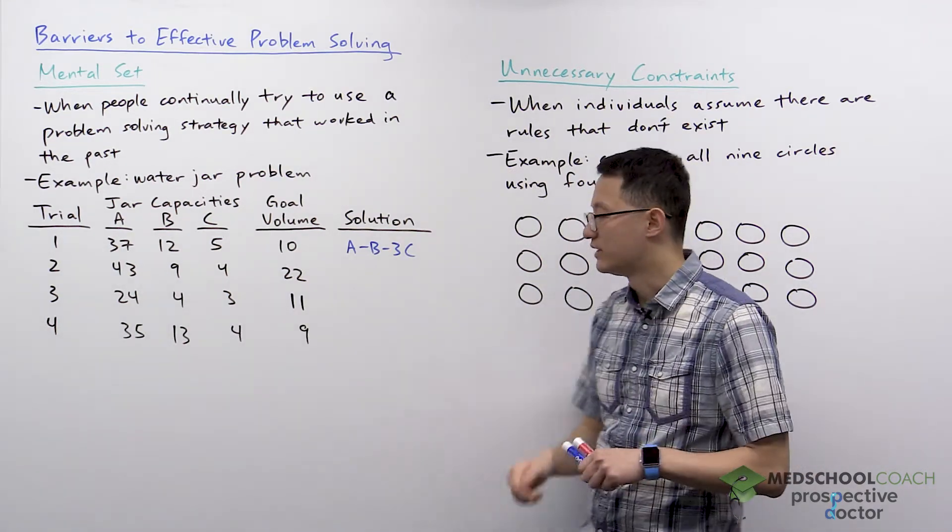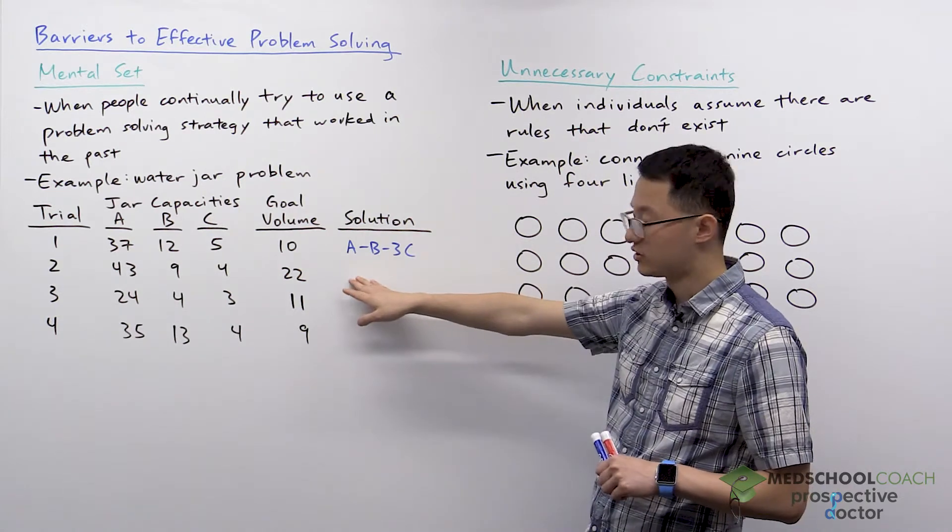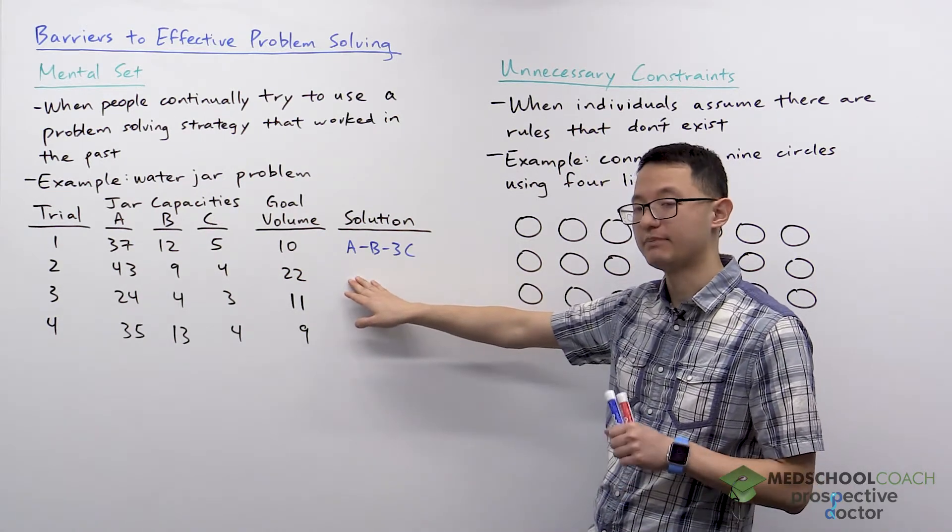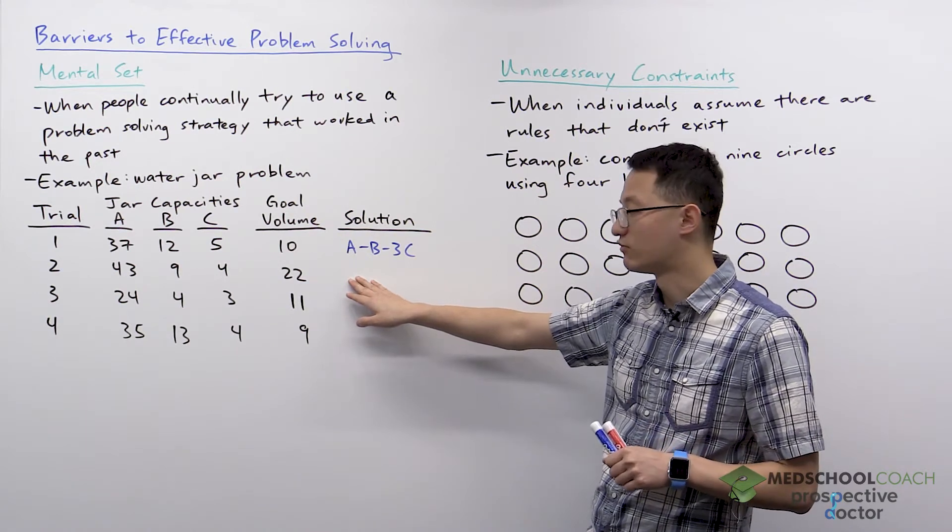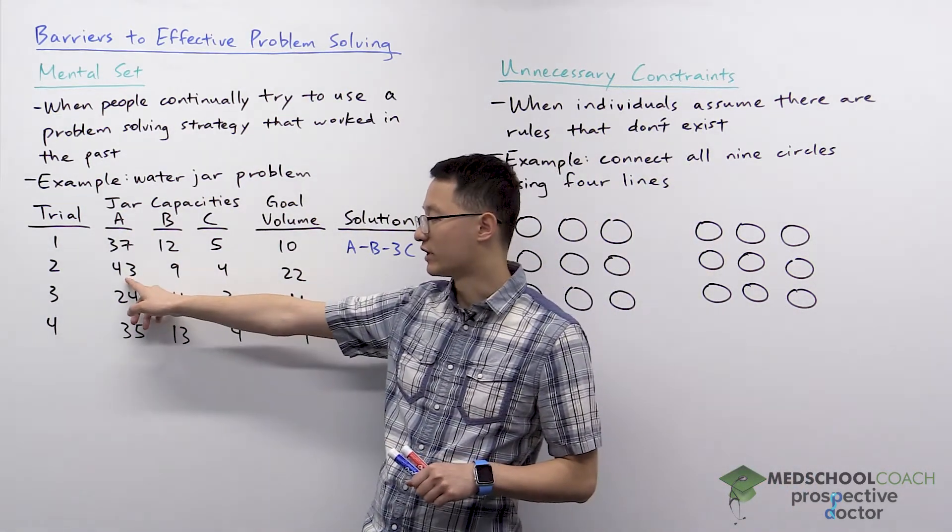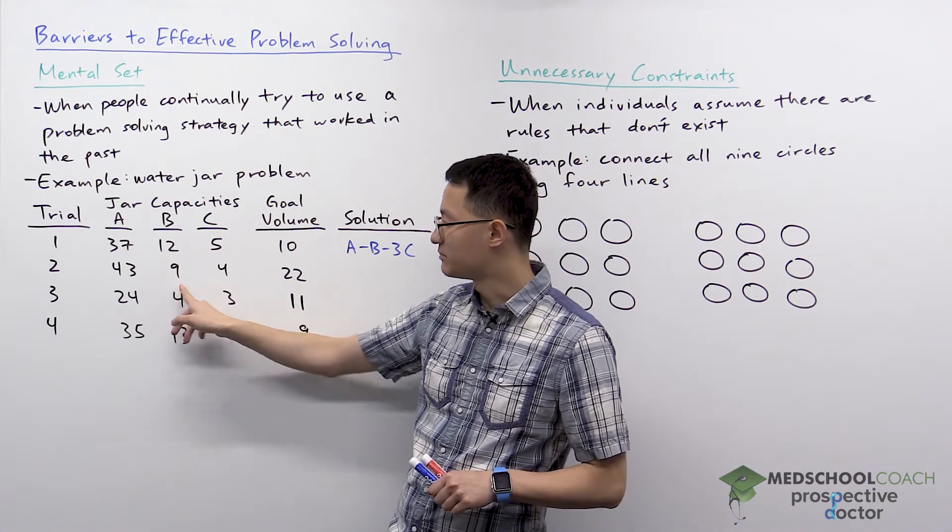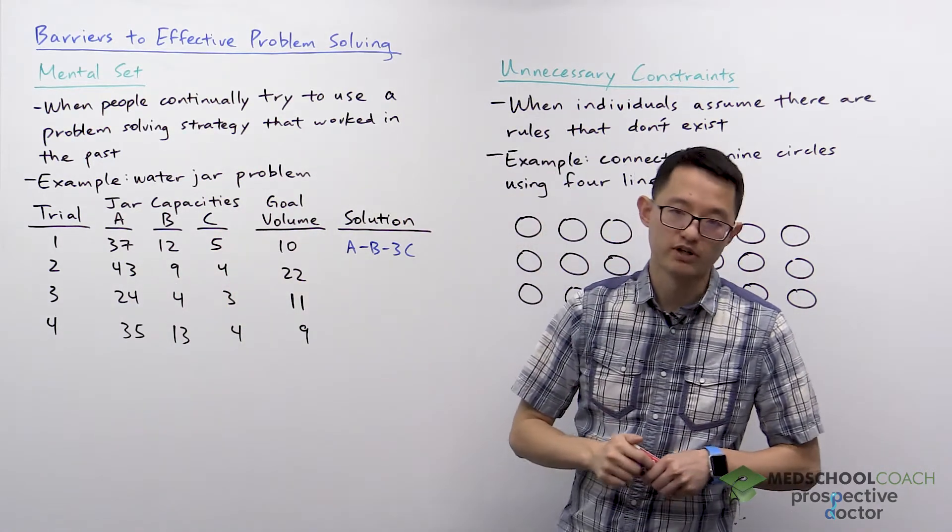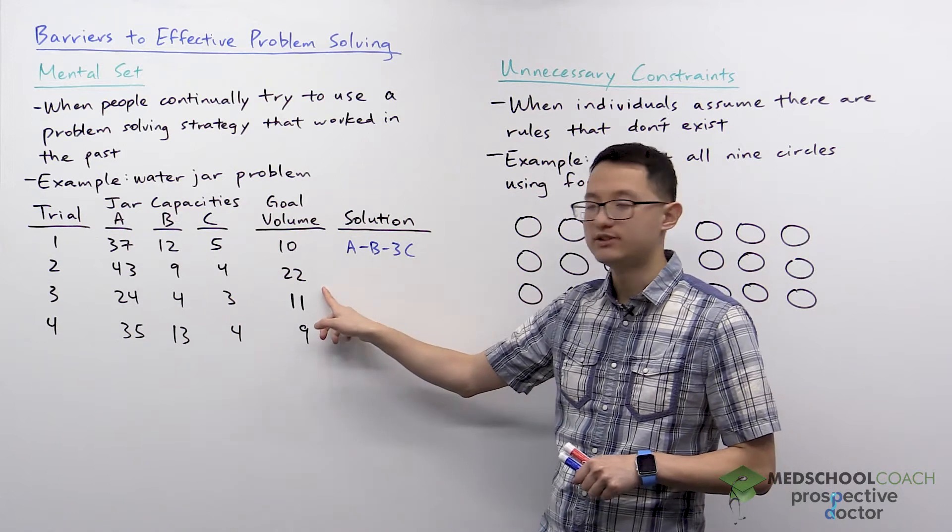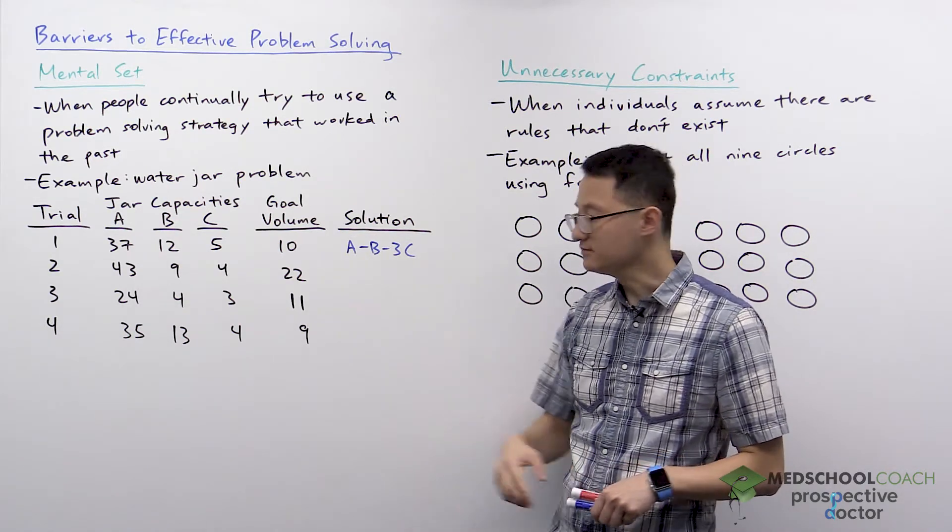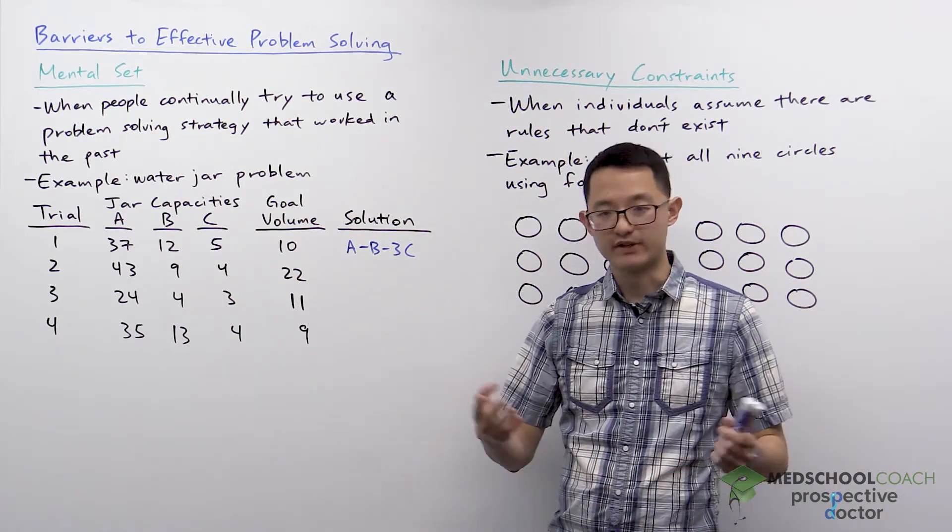We can now try this with another trial, trial 2. It's the same type of problem except the jars can hold different volumes of water. Jar A can hold 43 cups, jar B 9 cups, and jar C 4 cups. And your goal here is to measure out 22 cups of water.